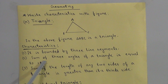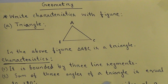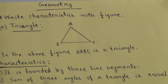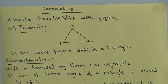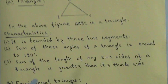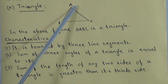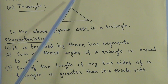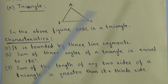The first characteristic of a triangle is: it is bounded by three line segments. Now the second characteristic: the sum of the three angles of a triangle is equal to 180 degrees. In any type of triangle, the sum of the three angles — that means angle ABC plus angle ACB plus angle BAC — is equal to 180 degrees.